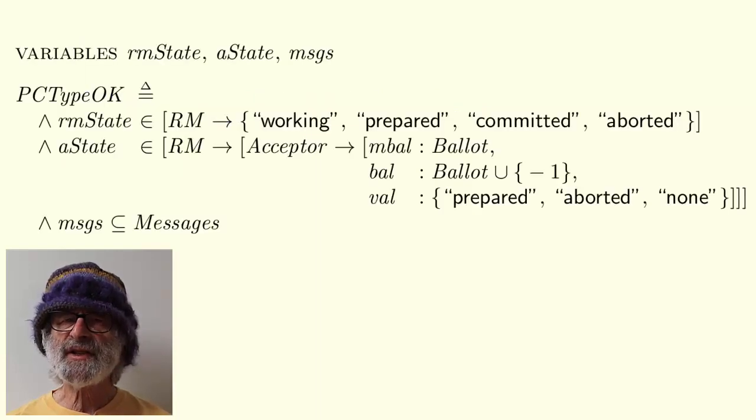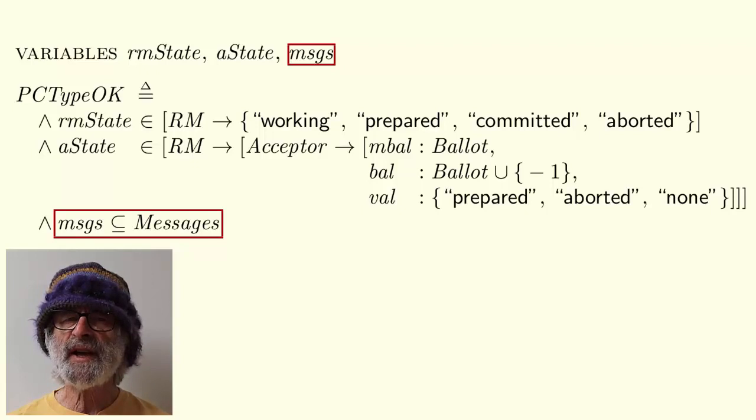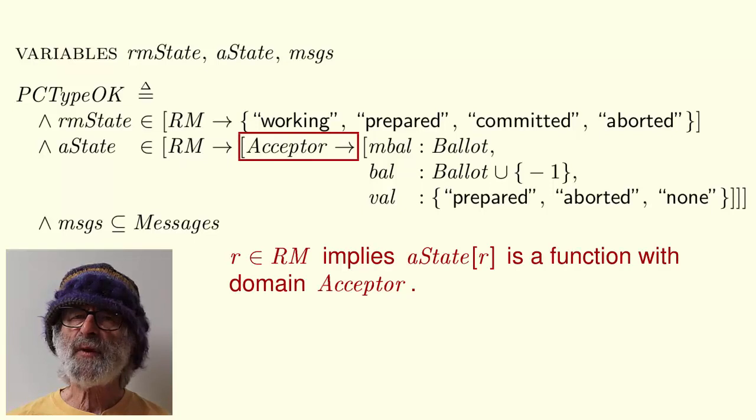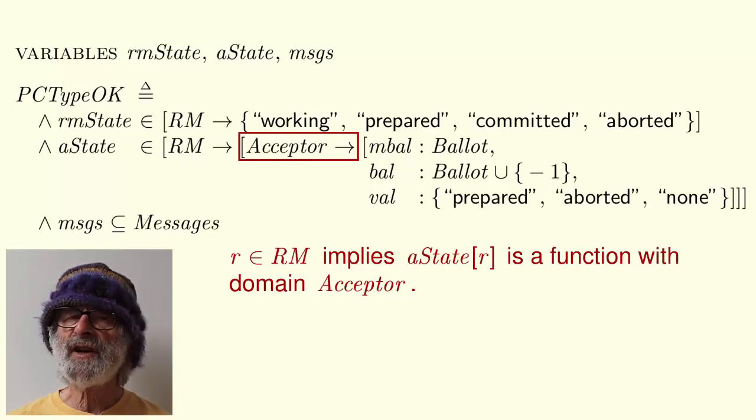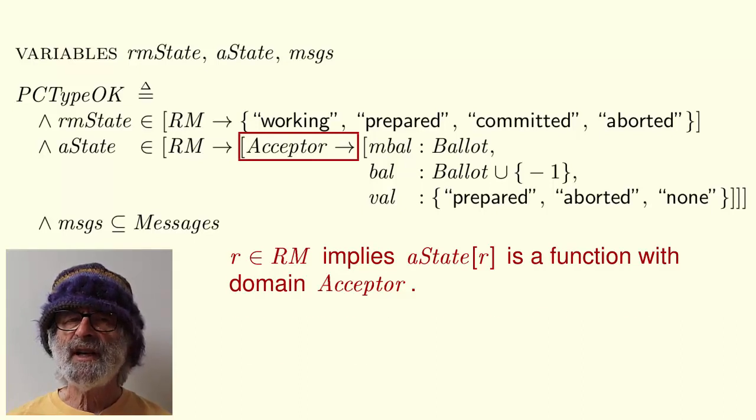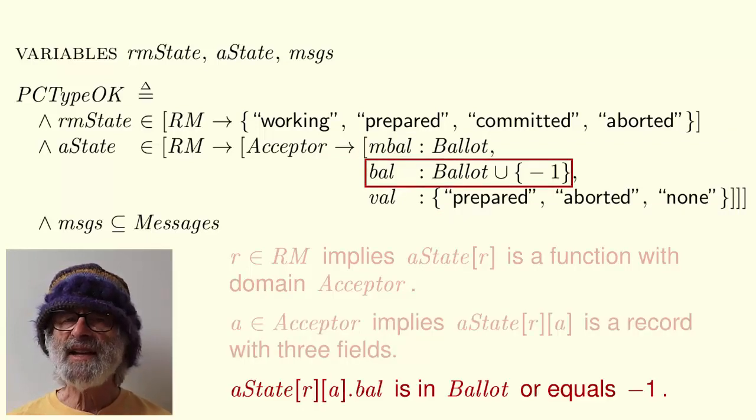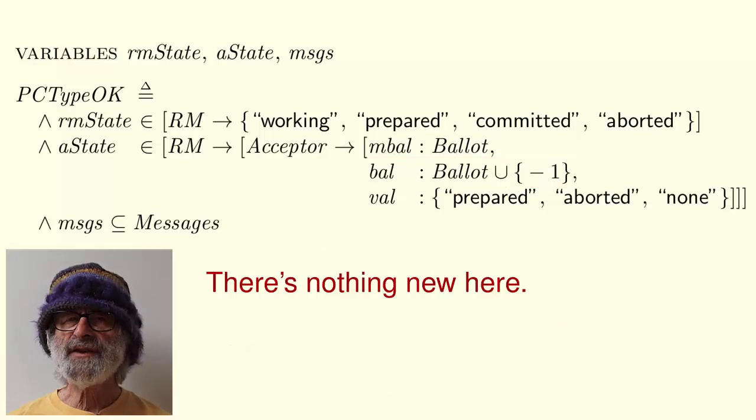The module next declares its variables and defines the type correctness invariant PCTypeOK. As in the two-phase commit spec, there is a variable msgs whose value is a set of messages. PCTypeOK also asserts that the value of the variable a state is a function with domain rm, such that for every r in rm, a state of r is a function with domain acceptor, such that for every a in the set acceptor, a state of r of a is a record with these three fields. And, for example, a state of r of a dot bal is in the set ballot or equals minus one. There's nothing new here. It's just a little more complicated than the formulas you've seen so far.